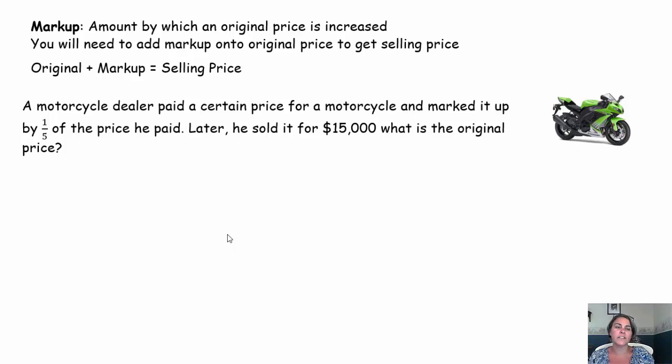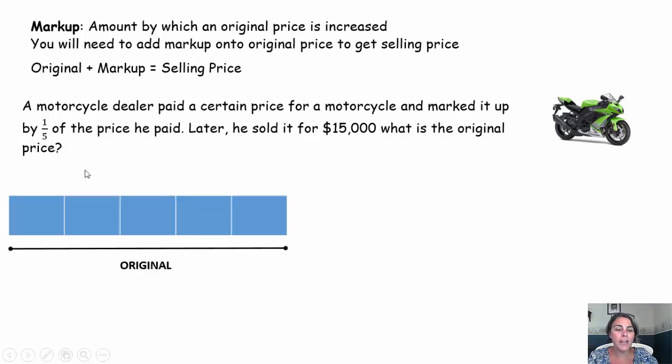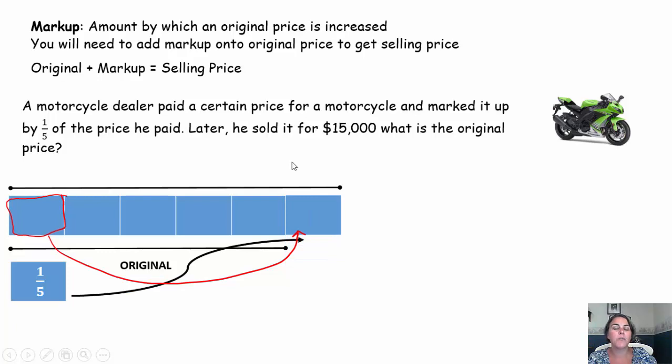So take a minute, pause the video, try it out, and come on back. Again I like visuals. So I don't know what the original was, but I know he took that original, he took one-fifth of that original and he marked it up by that one-fifth. He tacked on an extra one-fifth to come up with the total of $15,000. So he took a one-fifth of it and he tacked it back on to come up with this selling price of $15,000.